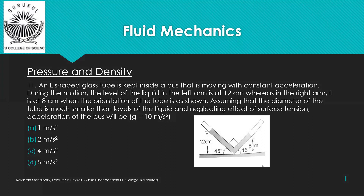Question eleven: An L-shaped glass tube is kept in a bus moving with constant acceleration. During motion, the level of liquid in the left arm is at 12 cm and in the right arm at 8 cm, with the tube orientation as shown. Assuming the tube diameter is much smaller than the liquid levels and neglecting surface tension, find the acceleration of the bus.